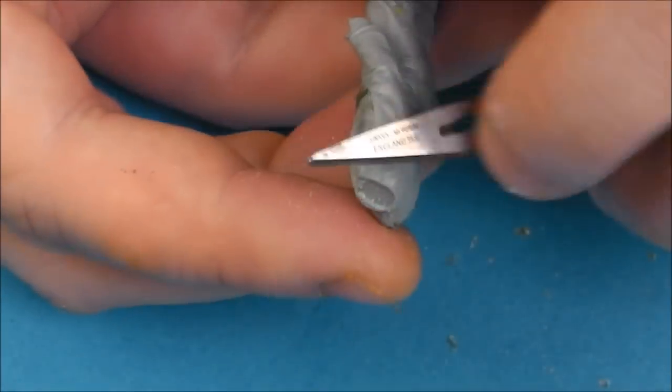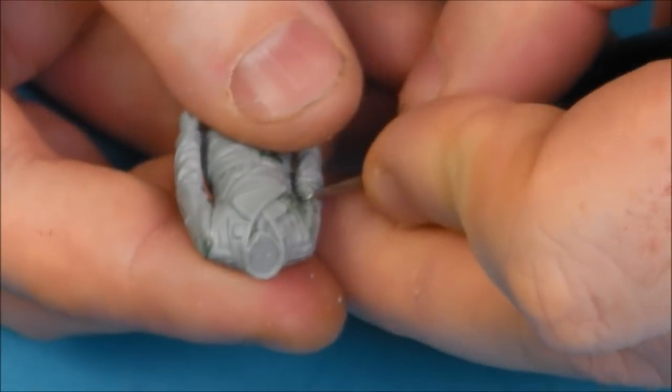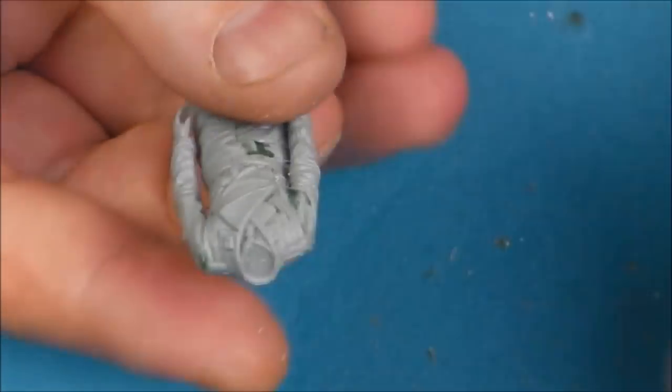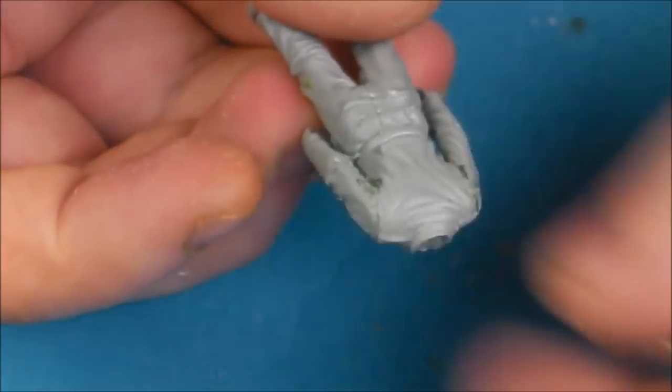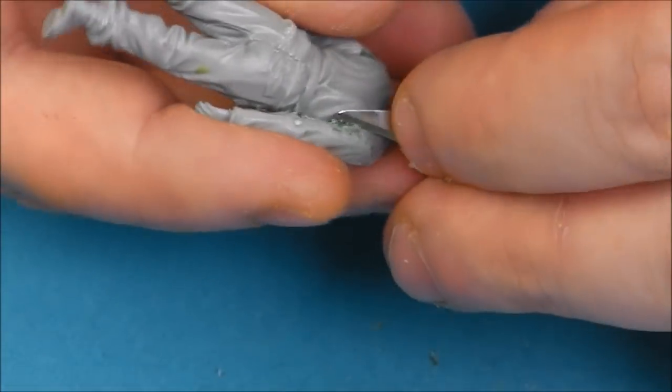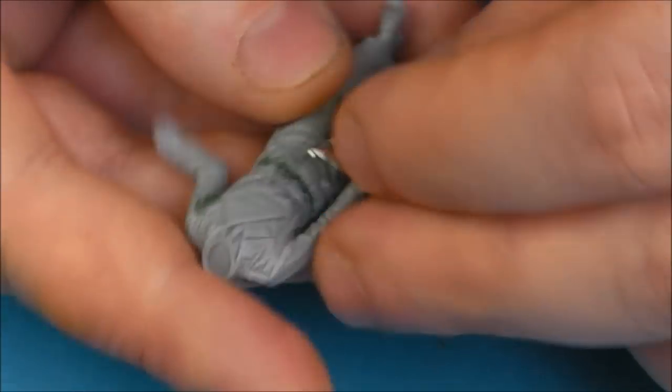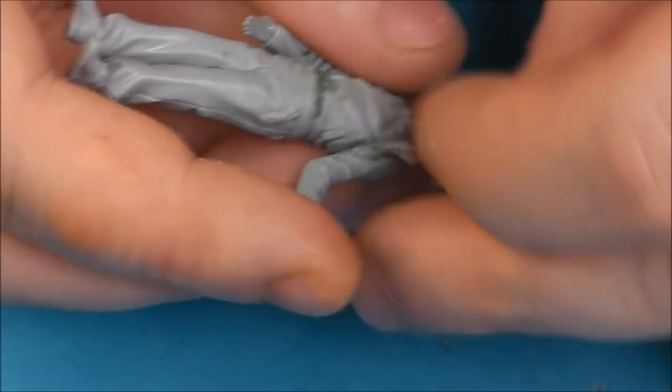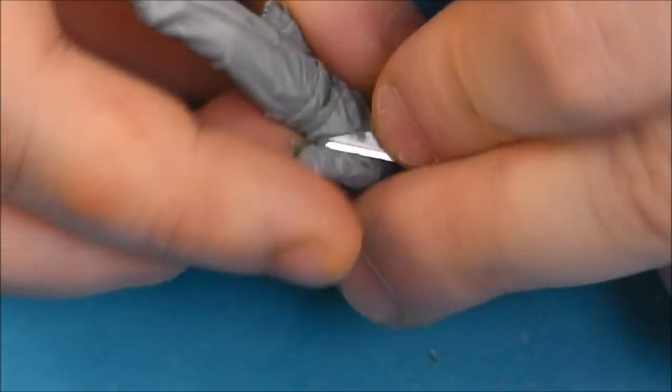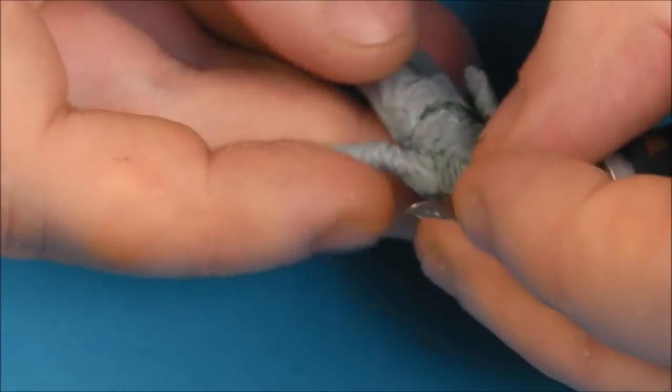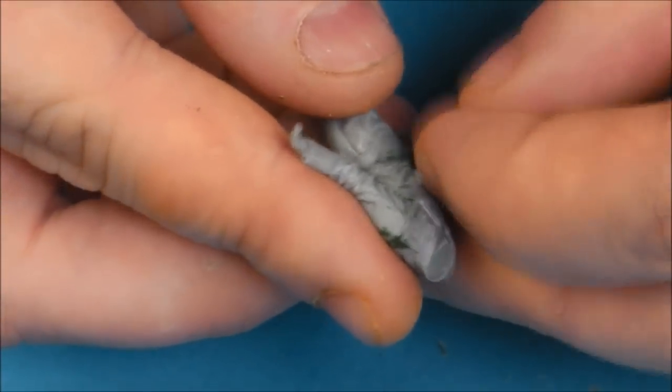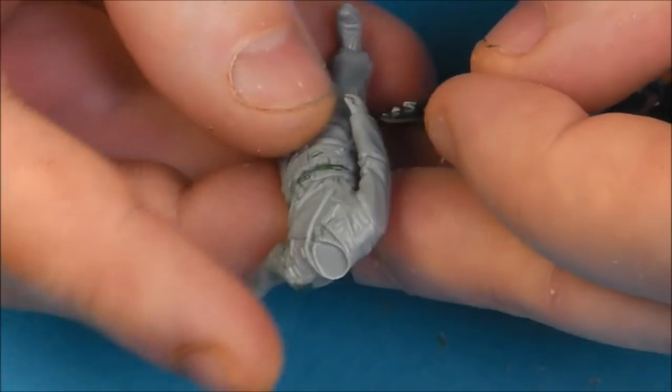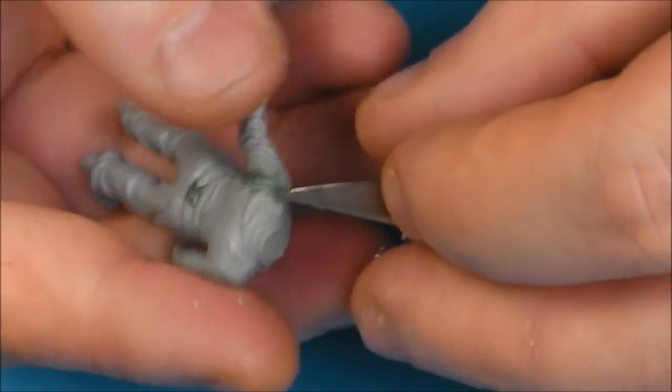Basically when you apply the water-based putty like Tamiya hole or Perfect Putty as I was saying, if you apply it and then dip your finger in water and wipe it away in the same motion, you will basically just clean the seam there and then. It is very simple and it's not as messy or as heavy as this stuff.